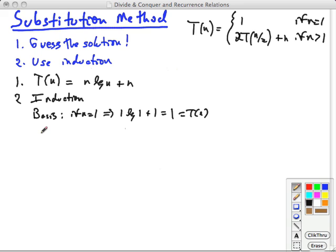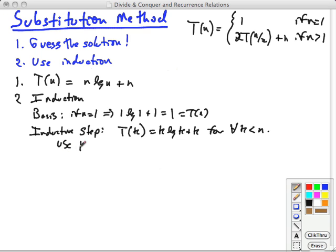Now the important part here is the inductive step. So here we need an inductive hypothesis, which is that if we assume that the statement to be proven is true for some values less than n, then we can use that to show that it is true for n. So our inductive hypothesis will be that t sub k is k log k plus k for all k less than n. And in particular, we're going to look at k equals n over 2, which is less than n.